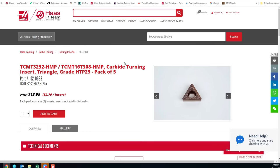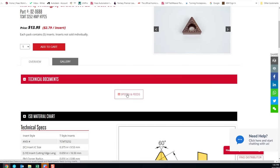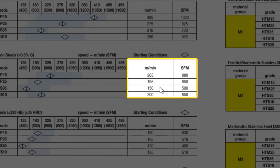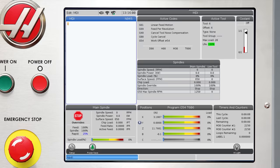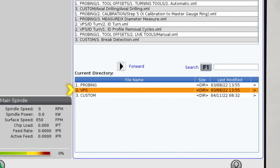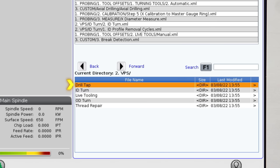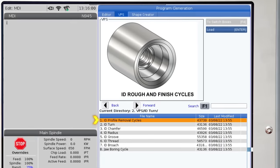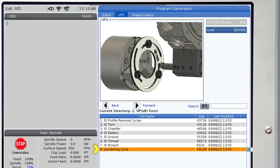I'm going straight to the speeds and feeds chart for this insert. This is the information I'll need for the template. The template can be found by pressing edit, selecting the VPS tab and arrow right to the VPS file. Cursor down to the ID turn file and press enter. Here you'll find the jaw boring template. Press enter and we can get that started.